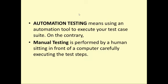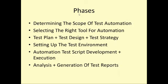There are different phases of automation testing. The first phase is determining the scope of test automation. The second is selecting the right tool — for example, if the software is built in Java, you need a tool compatible with Java. Third is designing the test plan, test design, and test strategy. Then comes testing of the test environment, automation test script development and execution, and finally analyzing the test results and generating test reports.